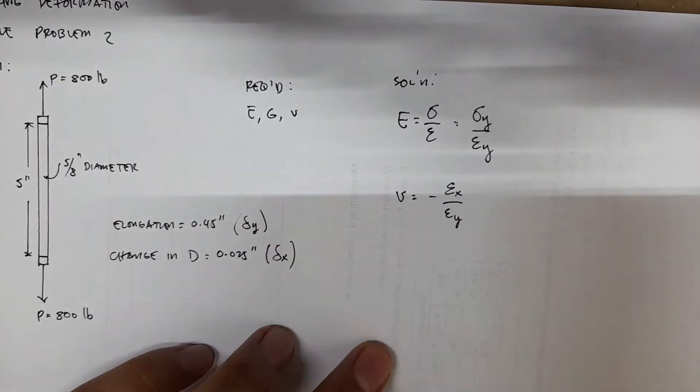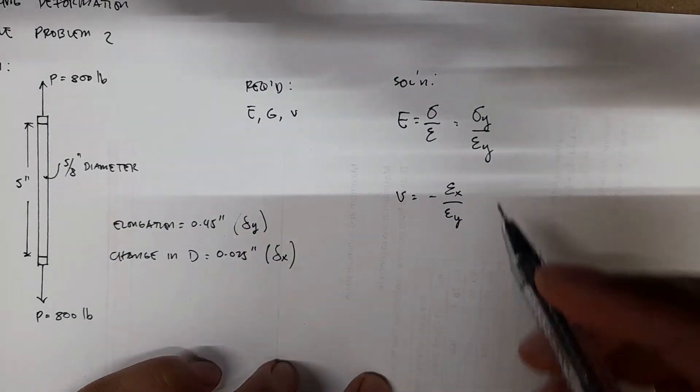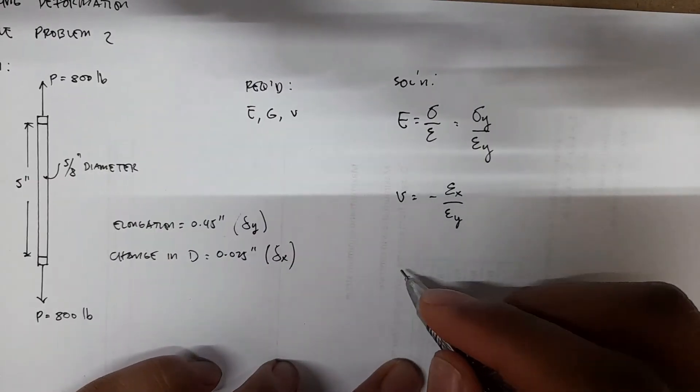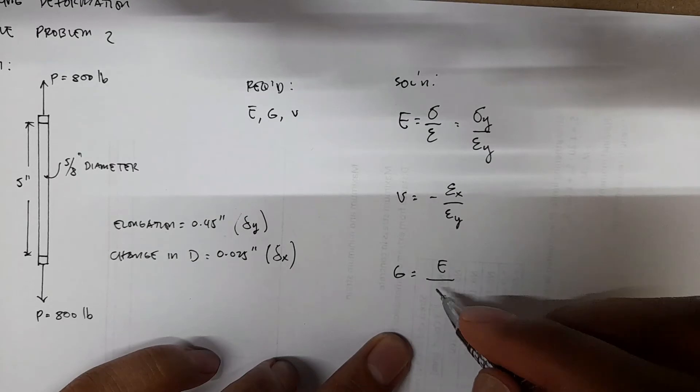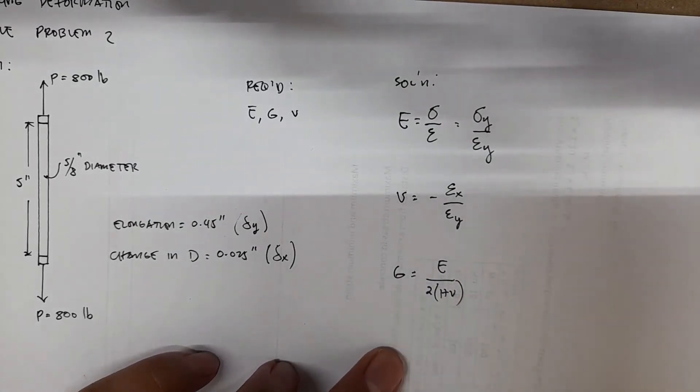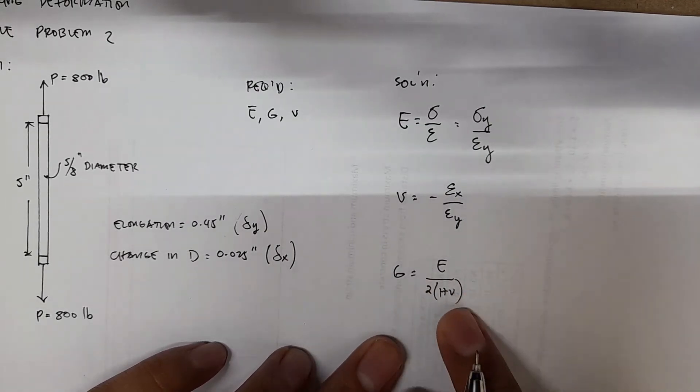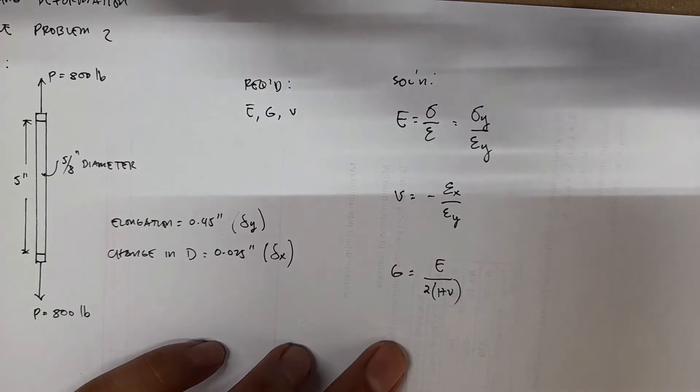You can make use of the relationship between E, G, and v. You have E equals 2G times (1 plus v). This is the relationship of the three parameters, and you can solve G with E and v given.